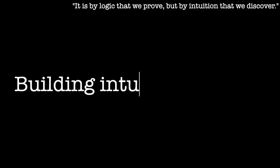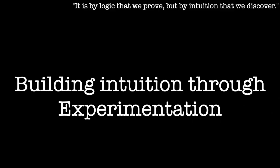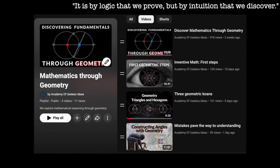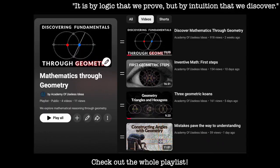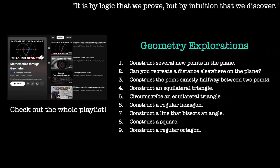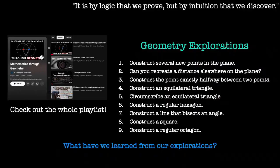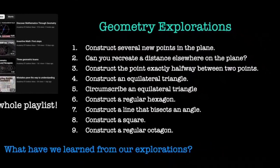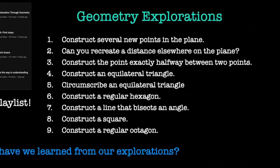Building intuition through experimentation. So what intuition have we built? In the past videos, we played with points, lines, circles. We built triangles, bisected angles, constructed squares and octagons. Nothing flashy, just objects on a plane. But these weren't exercises - they were experiments. Each construction nudged us to notice something: how lines behave, how circles encode distance, how symmetry shows up everywhere, how patterns repeat, how structure emerges from almost nothing.